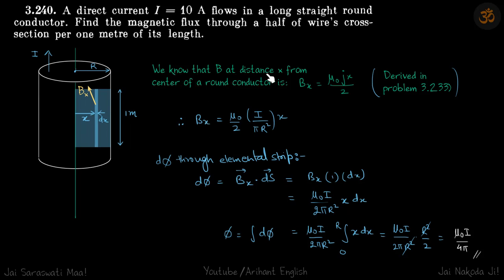Now we know that B at a distance x from the center of a round conductor is μ₀jx by 2. This we have derived before in this problem.